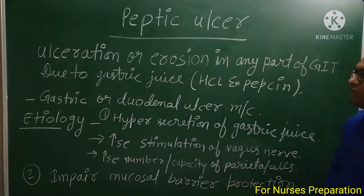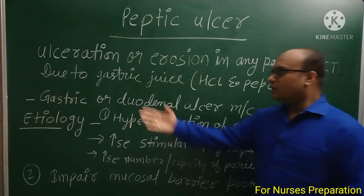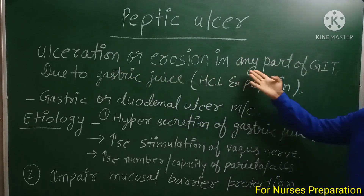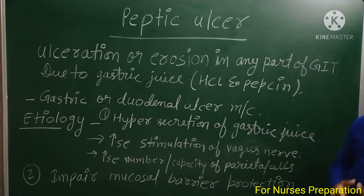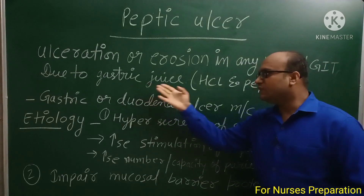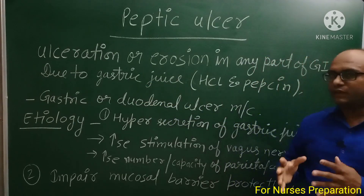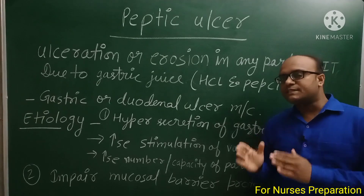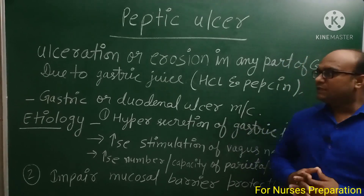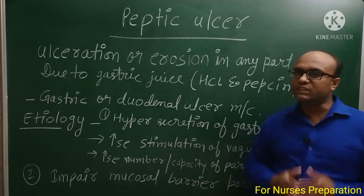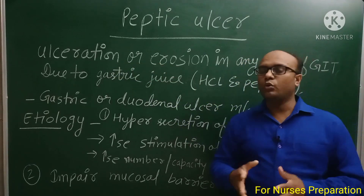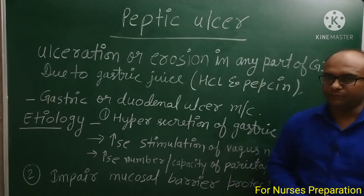Let's first talk about the introduction to Peptic Ulcer. What is Peptic Ulcer? Peptic Ulcer is an ulceration or erosion in any part of GIT due to gastric acid or gastric juices. GIT के किसी भी part में gastric juice exposure के कारण ulcers या erosion का होना Peptic Ulcer कहलाता है।